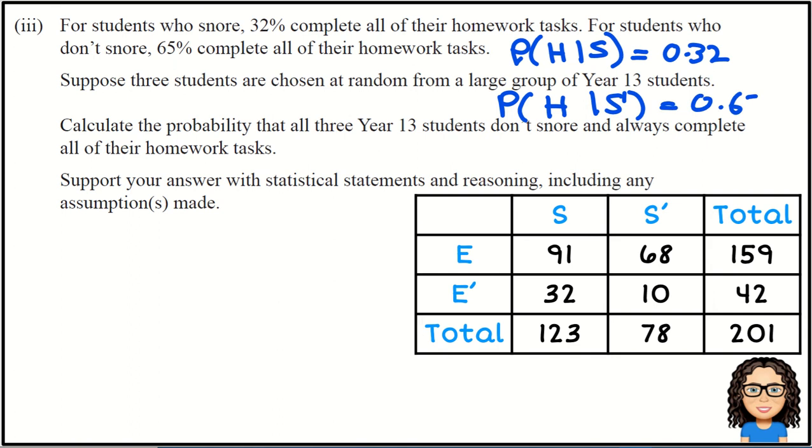I want to just focus on here the probability that students don't snore and complete homework. So I want the probability that they don't snore and they complete their homework. From the table I've actually got information there about how many snore and don't snore, so I can find the probability that someone does not snore. There are 78 students out of the 201 students who do not snore.